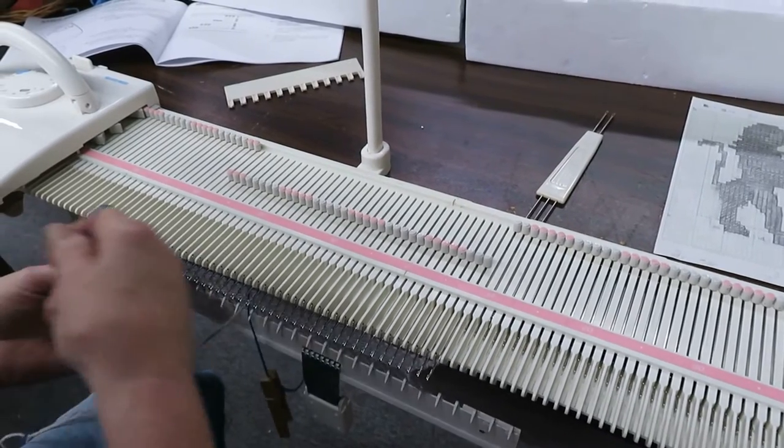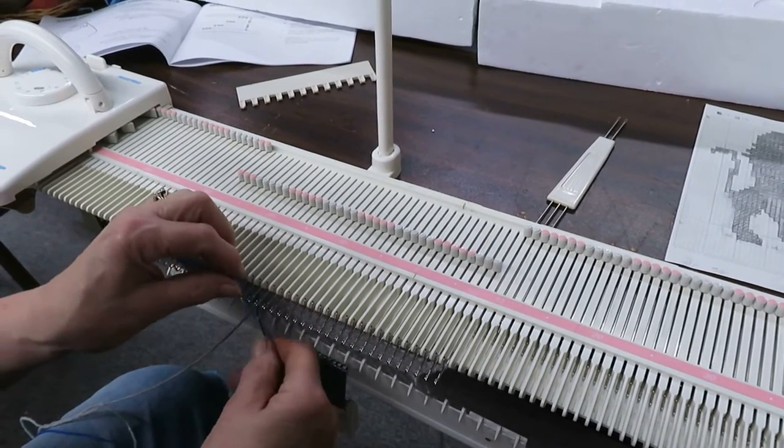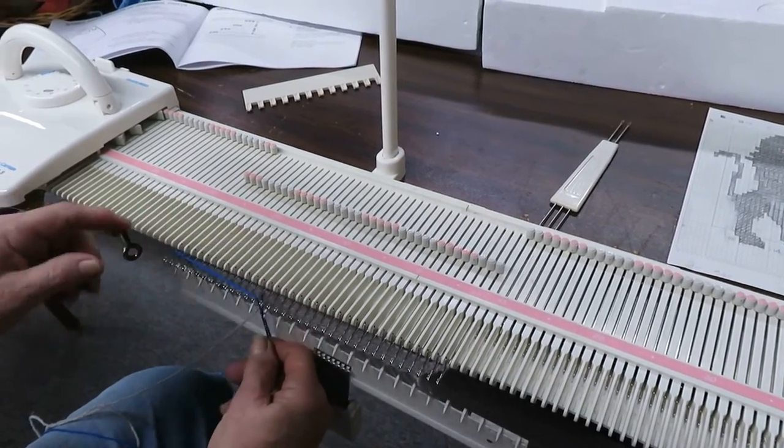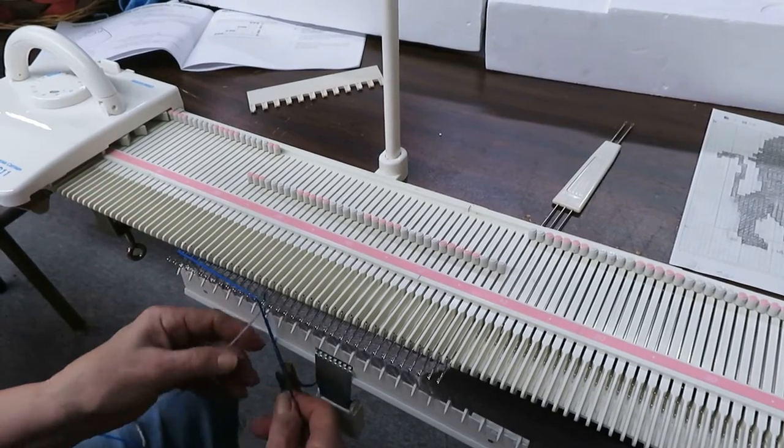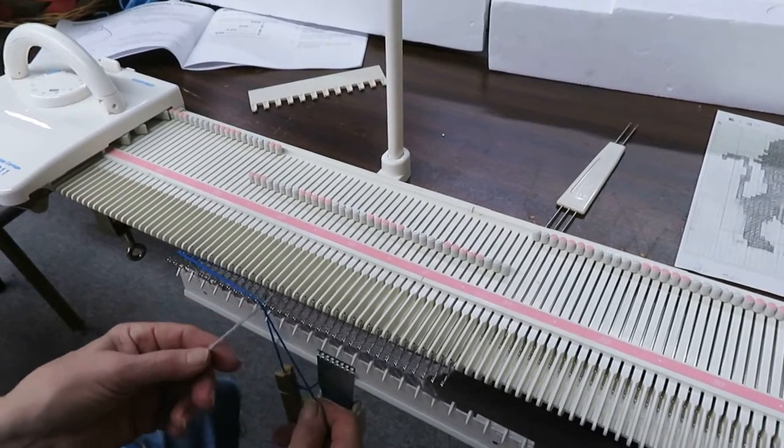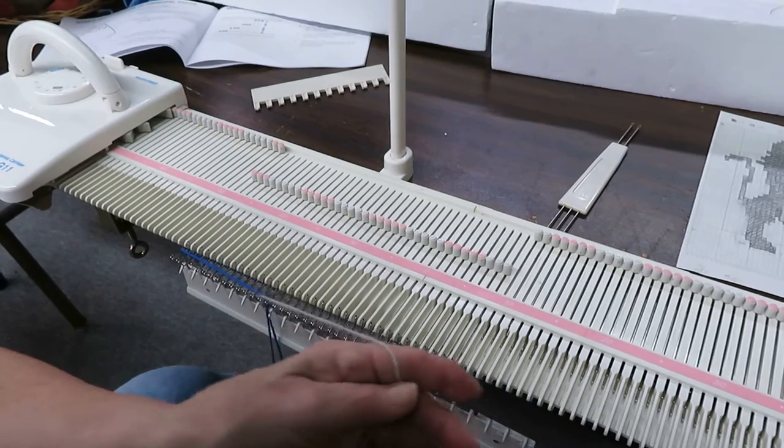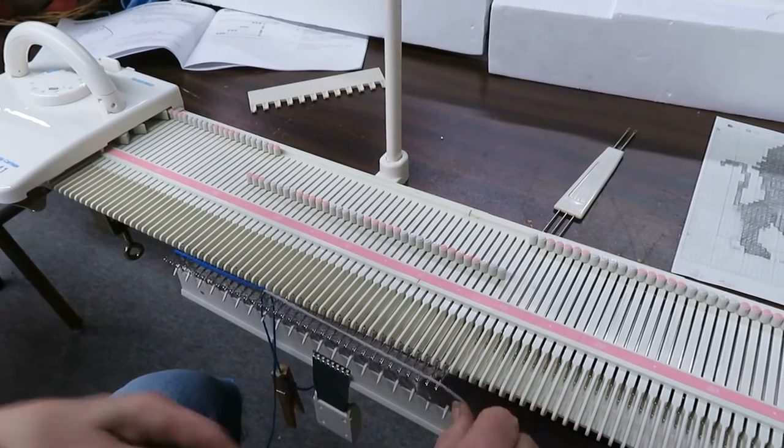Now I pick this up again, come across, following a chart. I'm putting it in the hooks, not behind the latches but in the hooks. And when I have two of them meet, I criss-cross so there won't be a hole.